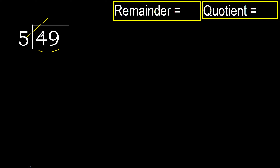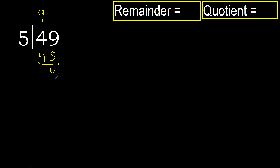5 multiply by 9 is 45, which is not greater — okay. Subtract. Next: there is no more number, therefore finish it.